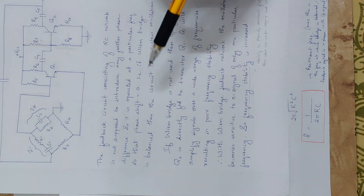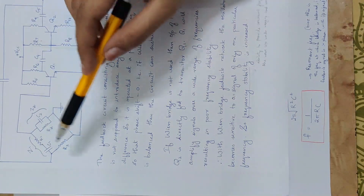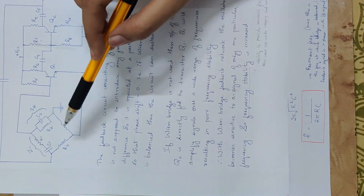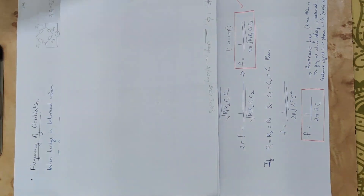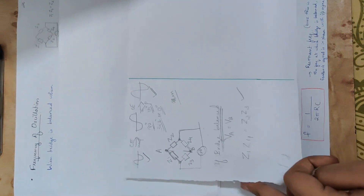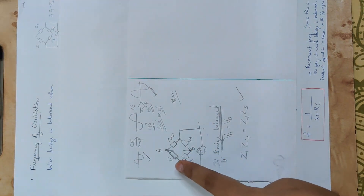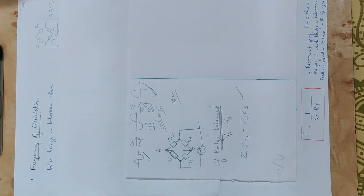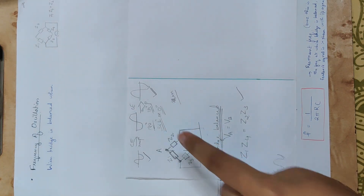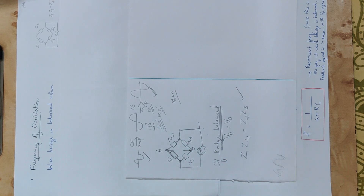When the Wien Bridge is balanced, the phase shift is zero, so the total phase shift is 360 degrees. When the bridge is balanced, the equation for the opposite arm impedances is: Z1 × Z4 = Z2 × Z3.